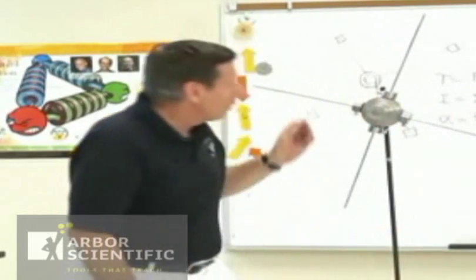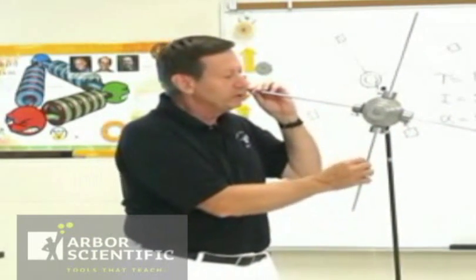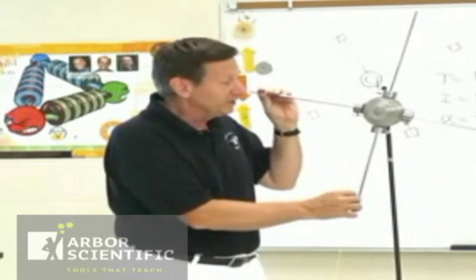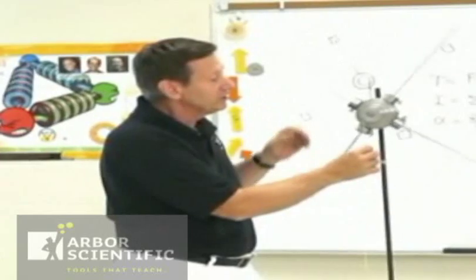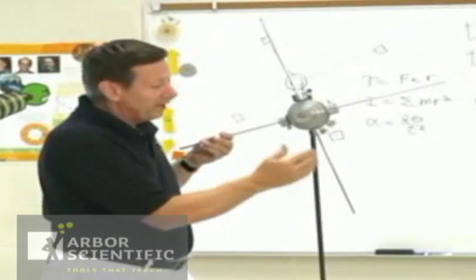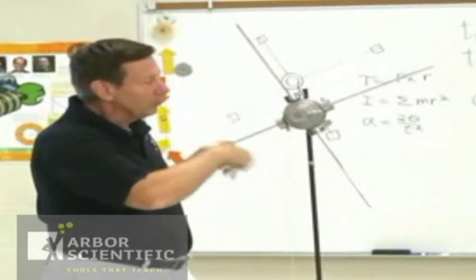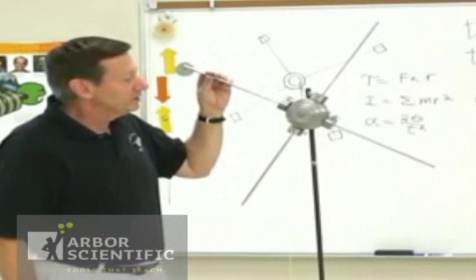In the laboratory, what we want to do is actually try to calculate the inertia of the system. We're going to do that two ways. We're going to do it dynamically by actually measuring the acceleration of the system and by the time it takes the weight to fall or the number of rotations the apparatus turns in a certain amount of time.